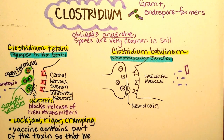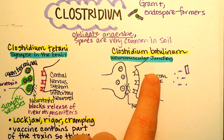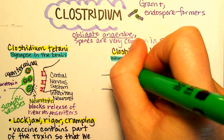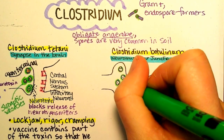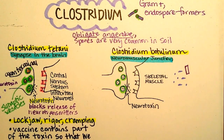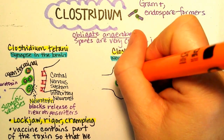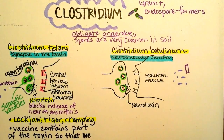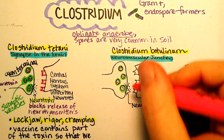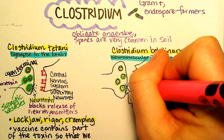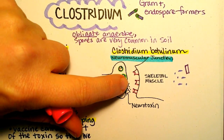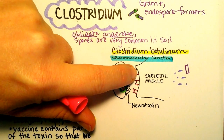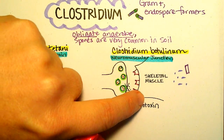So we have the axon coming to a skeletal muscle — this is in the peripheral nervous system. We take those synaptic vesicles and put the neurotransmitters inside of them. Over here are the receptors for the neurotransmitters. Normally, this axon would release neurotransmitters into the synaptic cleft, and they would bind to the skeletal muscle and make it contract.